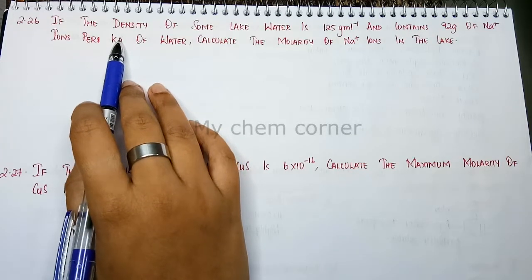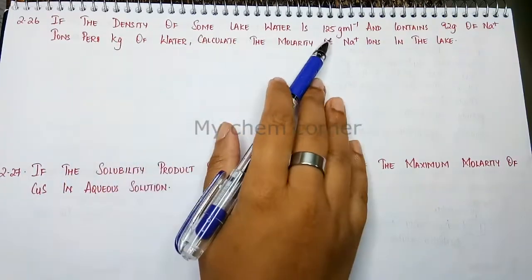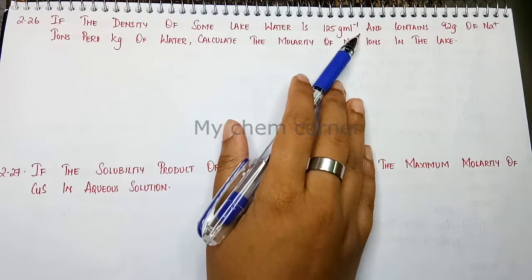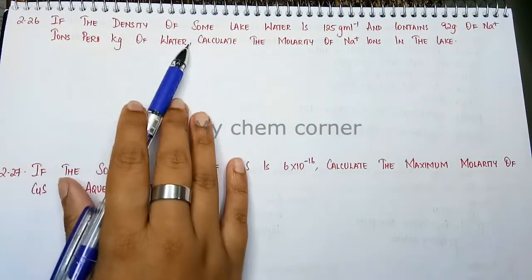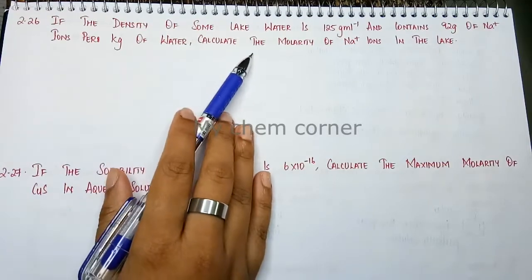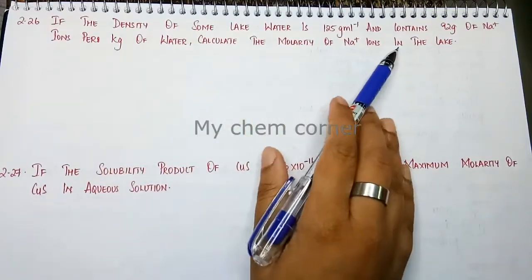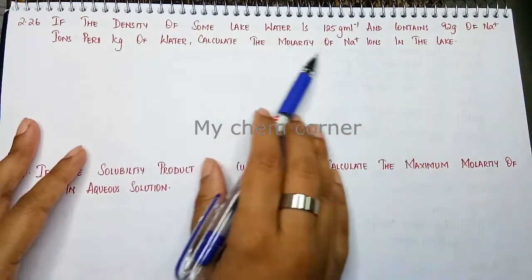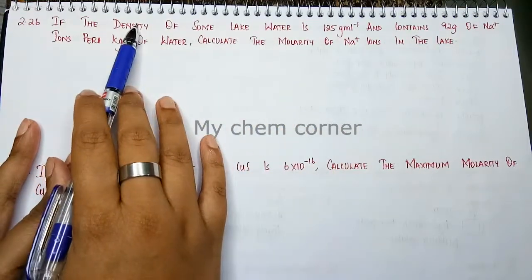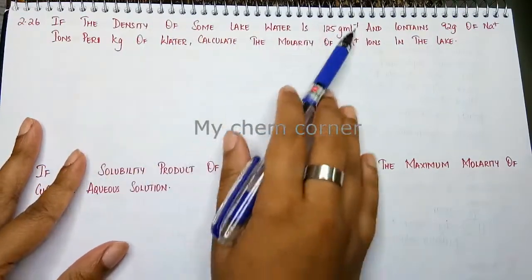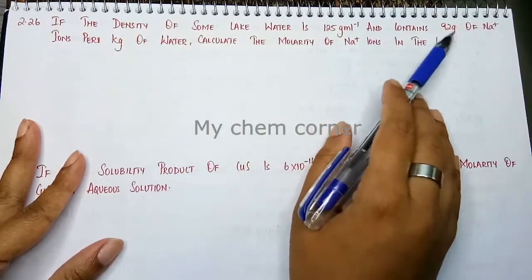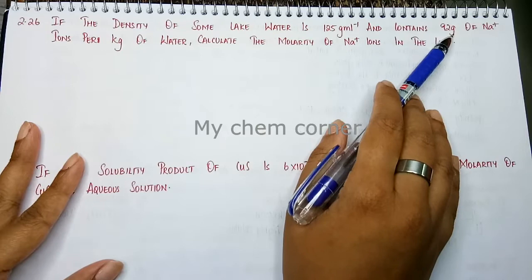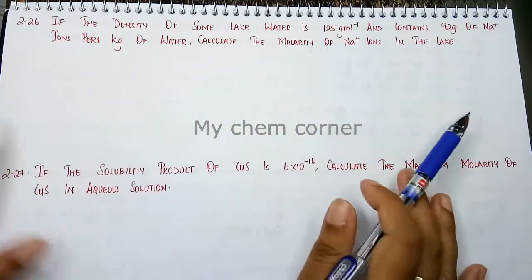The question reads: if the density of some lake water is 1.25 grams per milliliter and contains 92 grams of sodium ions per kilogram of water, calculate the molarity of sodium ions in water. So here clearly asked is molarity. Density is also given to us, and the mass of sodium ions per kilogram of water is also given.